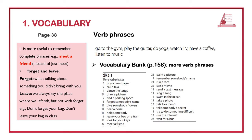Let's check the phrases. Number 3: buy a newspaper. Number 2: call a taxi. Number 1: dance the tango. Number 24: draw a picture. Number 7: find a parking space. Number 8: forget somebody's name. Number 11: give somebody flowers. Number 14: hear a noise. Number 16: help somebody.